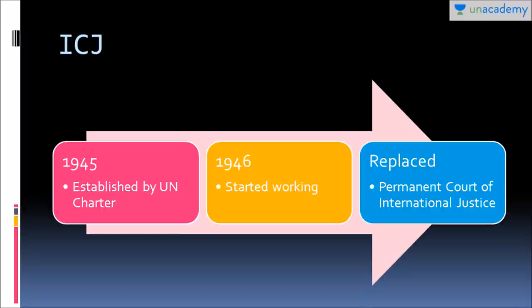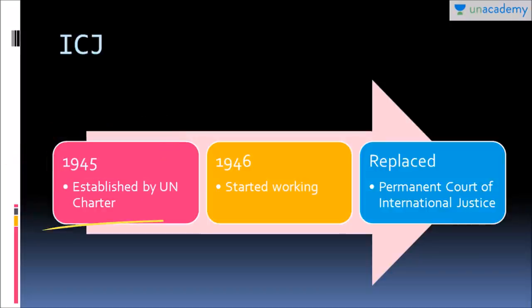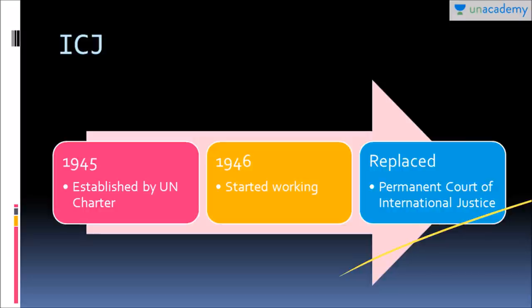As far as the International Court of Justice is concerned, this particular judicial organ of the United Nations was established in 1945 by the Charter of the United Nations. The Charter of the United Nations was passed in 1945 and came into existence on 22nd October 1945. Since then, the International Court of Justice came into the picture. It was established at The Hague, Netherlands, and it replaced the Permanent Court of International Justice.